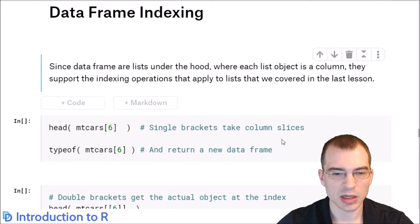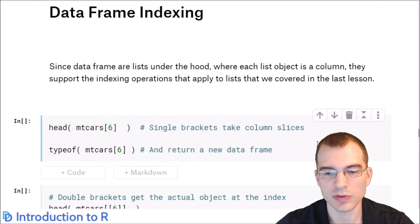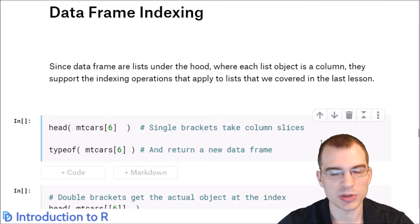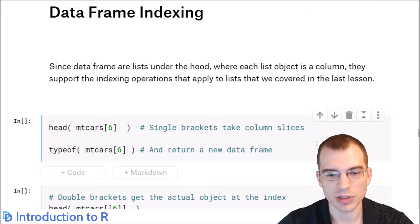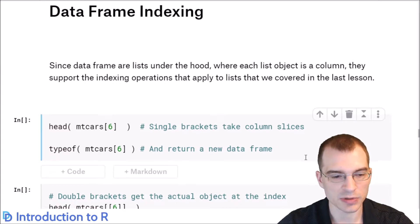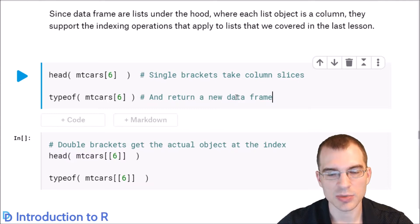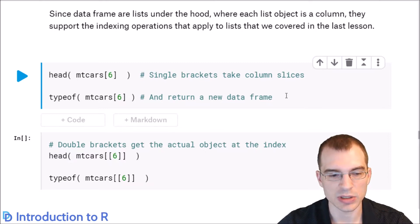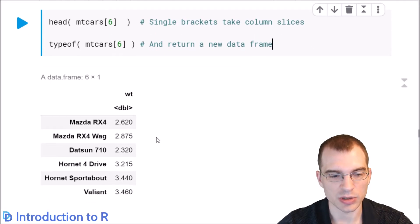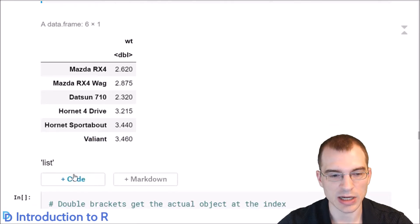You can also index into data frames using similar indexing operations we've learned for other data structures. Under the hood, data frames are built on top of lists, so all the indexing operations we learned for lists also work for data frames. Using single brackets with a number selects a column slice, but it actually returns a list — like a data frame still but with only one column.